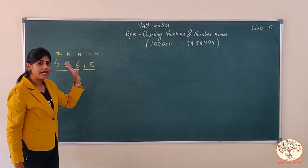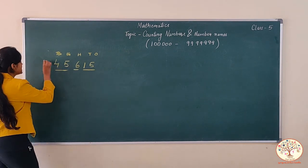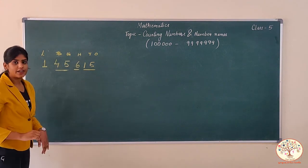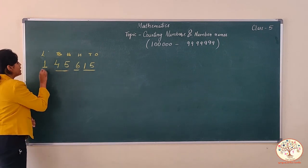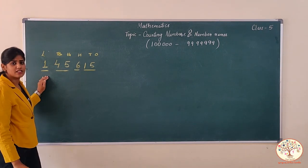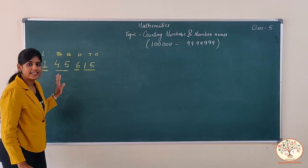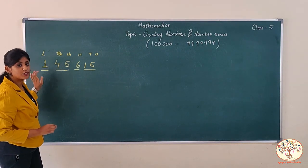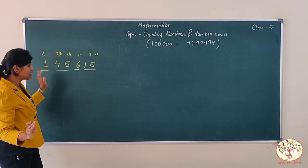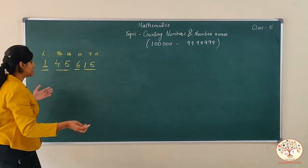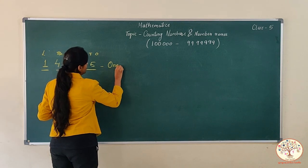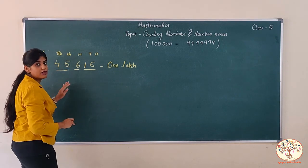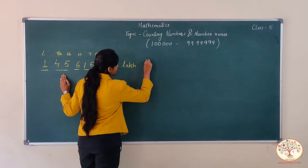Now today we are talking about six-digit numbers, so let's add one more digit here and make it a six-digit number with lakhs as the new place value. You just have to add one more place and the rest goes on the same as before. Now one is in the lakhs place, so the number name for one will be one lakh, and the rest goes as it is. Thousands and ten thousands are read together and it will be forty-five thousand.